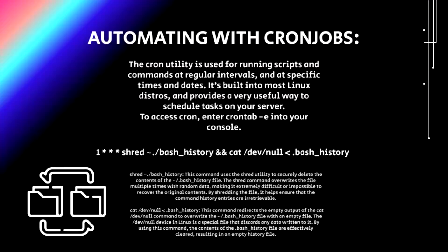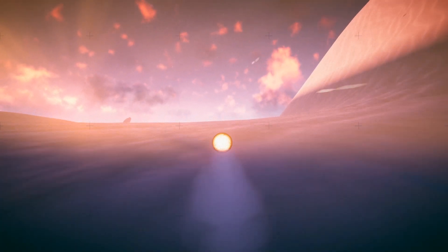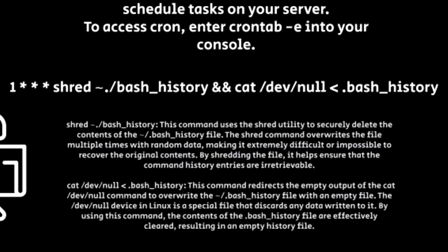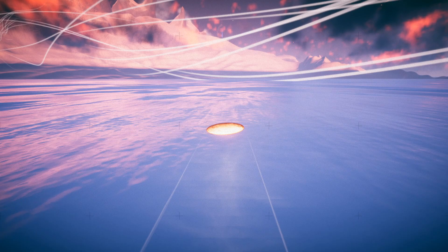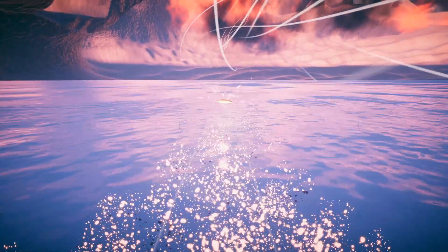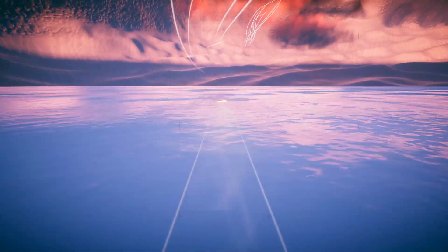Now you can automate this with something called cron jobs. The cron utility is used for running scripts and commands at regular intervals and at specific times and dates — it's built into most Linux distributions. You can schedule a shredding of your Bash History using this command. The 'shred .bash_history' part shreds the history, and 'cat /dev/null' replaces the file with an empty one. The cron job timing is set so it runs on the first hour of every single day, effectively clearing your Bash History daily.